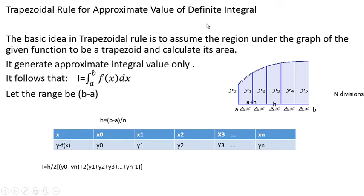This is the trapezoidal rule. Before going to the coding, we need to understand the trapezoidal rule. This rule is actually used for calculating the approximate integral value of a given function. The basic idea is to assume the region under the graph of the given function to be trapezoidal and calculate its area.